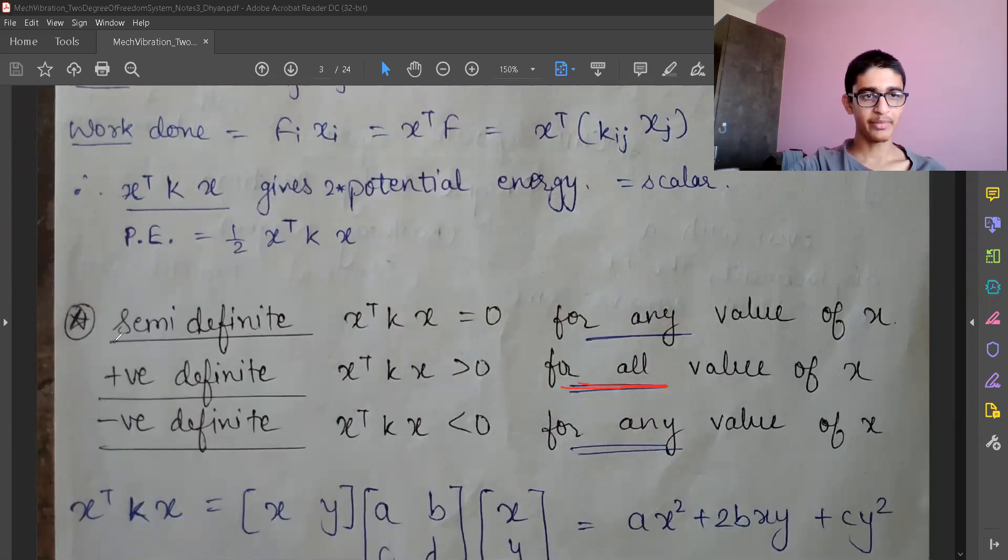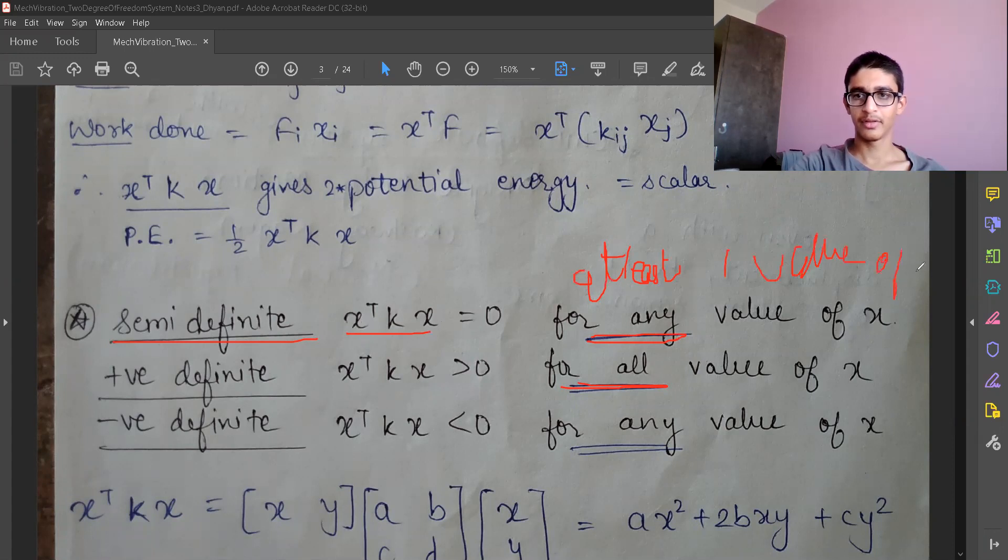Now let's come to semi-definite. It means that X transpose KX is equal to zero for at least one value of X. And for the negative definite, X transpose KX is less than zero for at least one value of X.